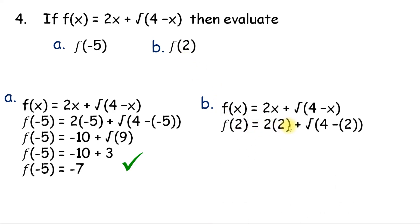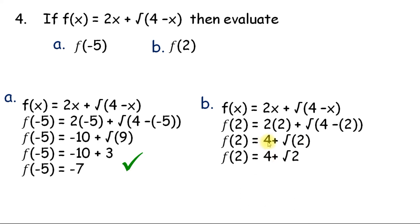For f of 2: substituting x equals 2, we get 2 times 2 plus the square root of 4 minus 2. That gives 4 plus the square root of 2. So f of 2 equals 4 plus the square root of 2.